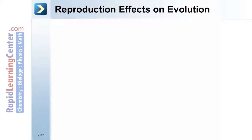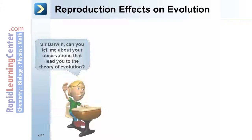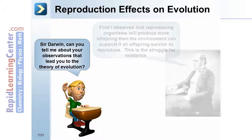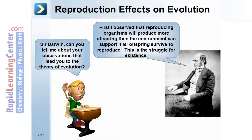Regarding reproduction's effects on evolution, Darwin observed that reproducing organisms will produce more offspring than the environment can support if all offspring survive to reproduce. This is the struggle for existence.